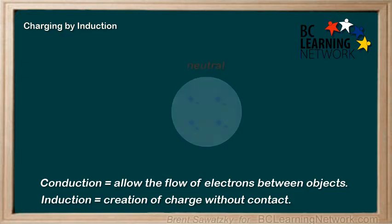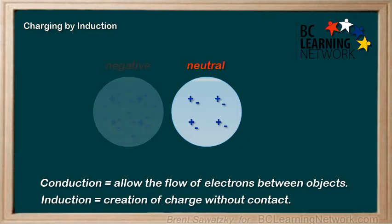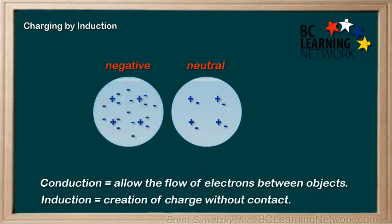For example, if we have a neutral object and we bring a strongly charged negative object close to one side of it, what happens? Well, we remember that electrons repel electrons. So even though they don't touch, all the electrons in the neutral object are trying to get away from that negatively charged object. They're repelled, so they all push over and can end up on the other side of the neutral object, pushing towards that side. And effectively, you've made the neutral object half positive and half negative without even touching it. This is charging by induction.